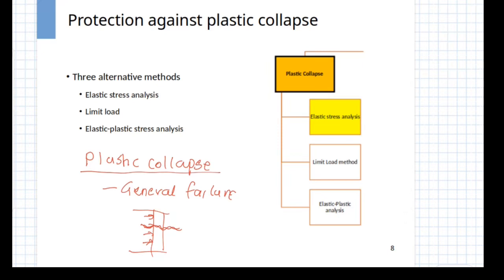Since we are dealing with ductile materials, we will not get brittle fracture, but in this particular mode of failure, we will get total yielding across the entire cross section. We do not want this to happen, and the first mandatory check, which is known as the plastic collapse check, is to prevent against this mode of failure.